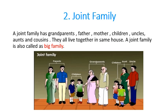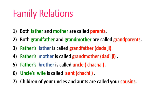A joint family is called a big family because, as you can see in this picture, we are having more members. So this type of family is called a joint family. Children, today we will see family relations. First, both father and mother are called parents.